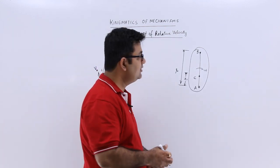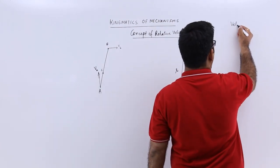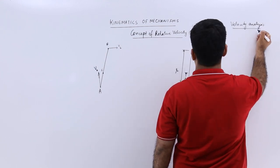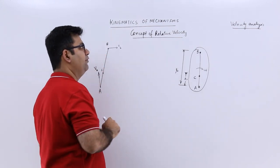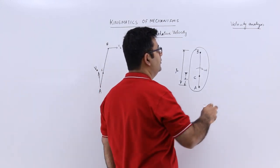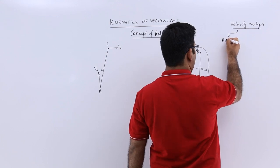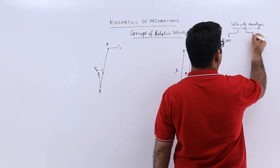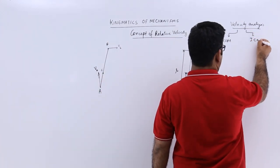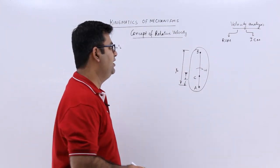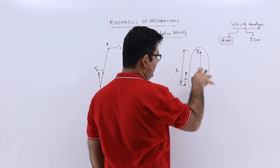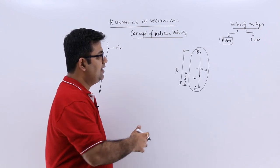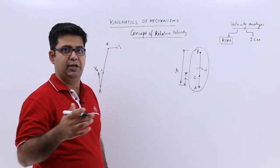The velocity analysis is done with the help of two methods. The first method, as you see on the board, is the relative velocity method, or RVM. The second one is the instantaneous center method, or ICM. We'll start with the first one — the relative velocity method — in this particular video.